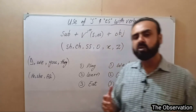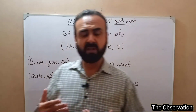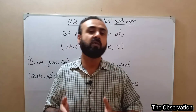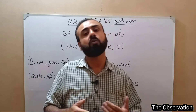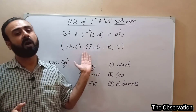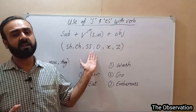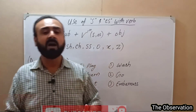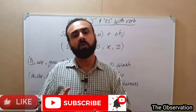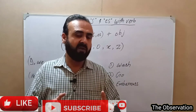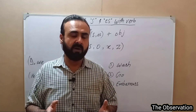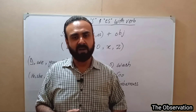So students, this is how it works: when the third person singular comes in the subject in present simple tense, S or ES is added to the verb. Memorize this list — whichever verb ends with these specific endings will take ES when the subject is third person singular, and all other verbs will take only S. Thank you very much.